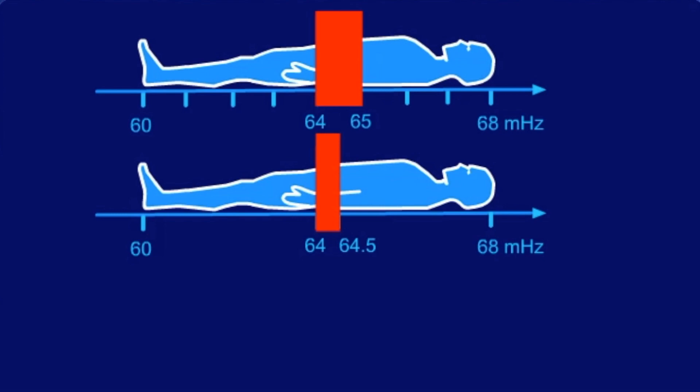There is another way to select a different slice thickness. In our example, we used a gradient field that produced precessing or resonant frequencies, starting at 60 MHz at the feet, up to 68 MHz at the top of the head.